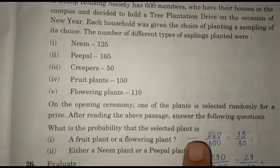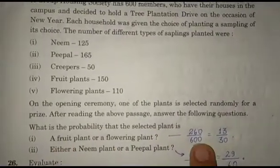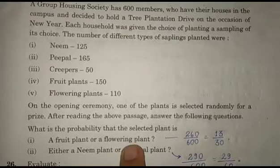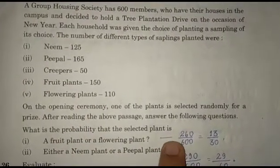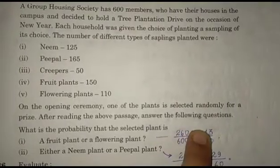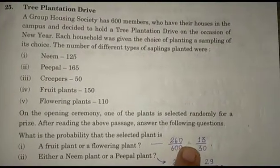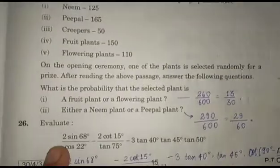Fruit plant or flowering plant: total cases is 260. So favorable outcomes is 260 and total outcomes is 600, giving us 260/600 = 13/30 as the answer.